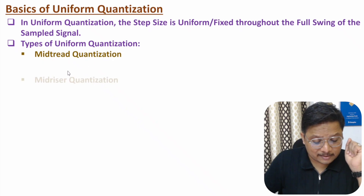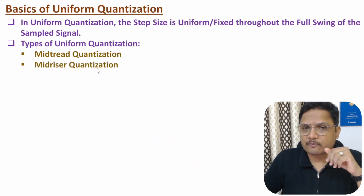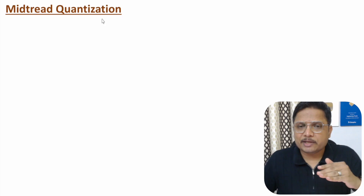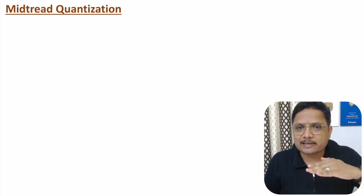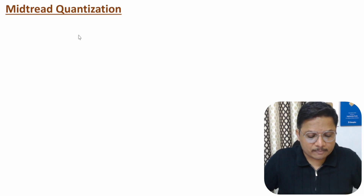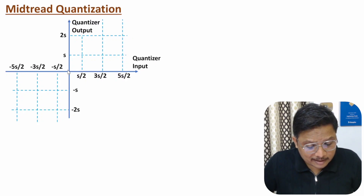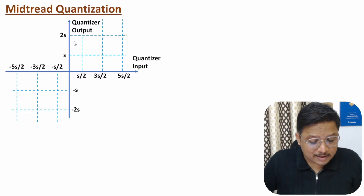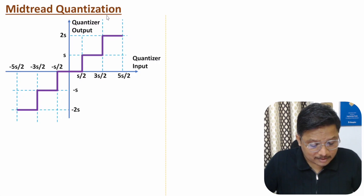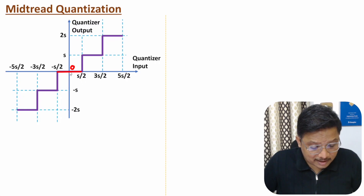Let me explain the first category: mid-tread quantization. I'll explain it with respect to characteristics where horizontally we consider quantizer input and vertically we consider quantizer output. Here we have step size s. If you observe the characteristics of mid-tread quantization, between minus s/2 to plus s/2 the quantizer output is 0.